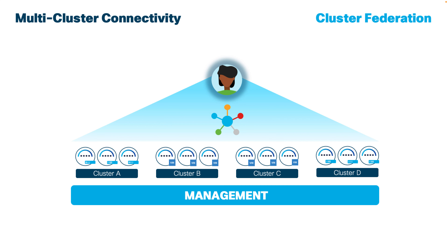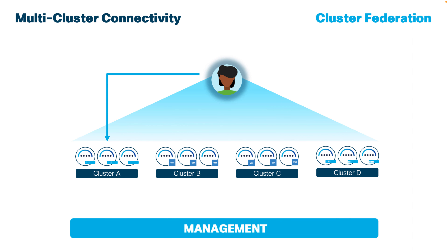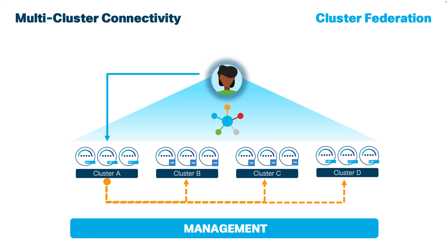Creating a multi-cluster connectivity is really simple. You just have to go to a Nexus Dashboard cluster and add one or more additional clusters. As you do so, a group of clusters is formed. The cluster where you create the group becomes the primary cluster.